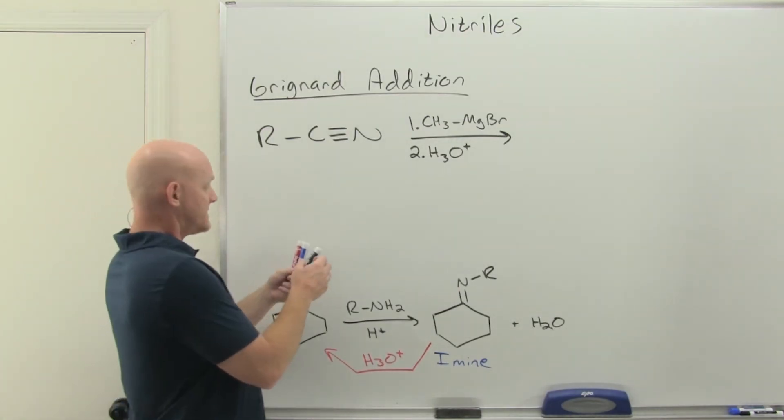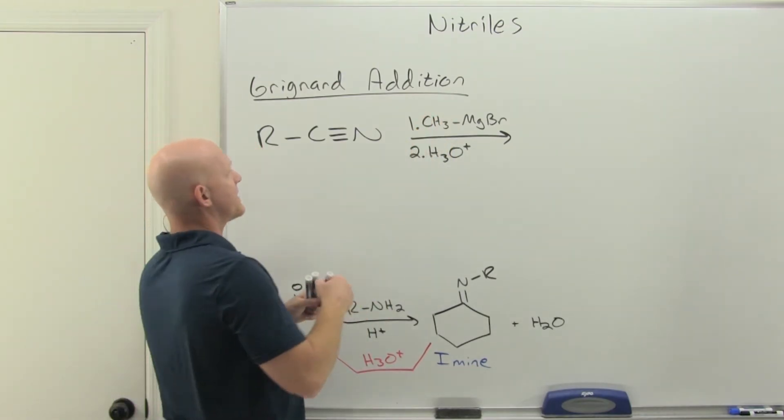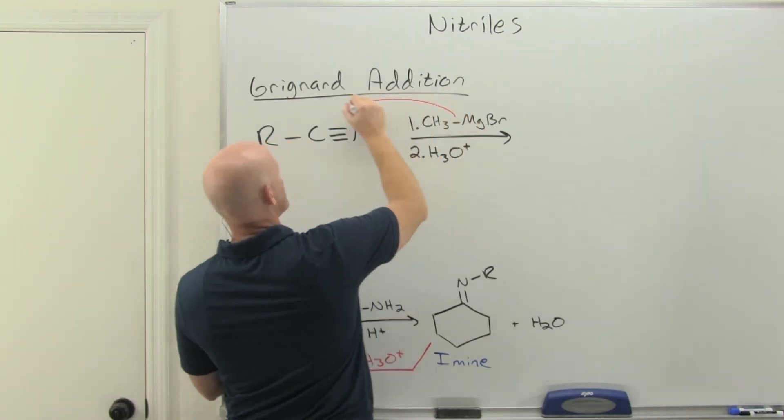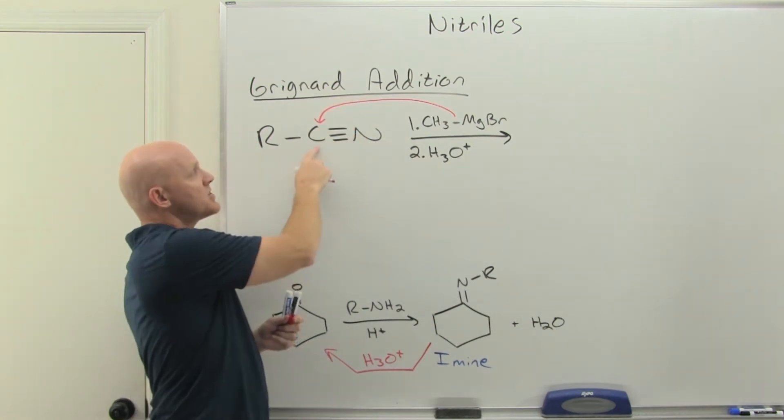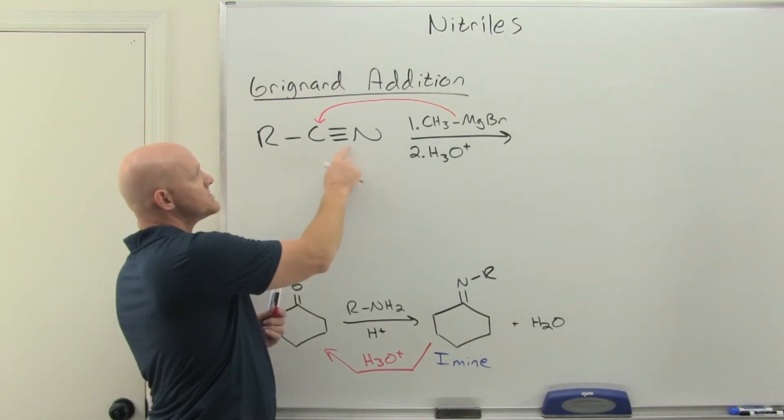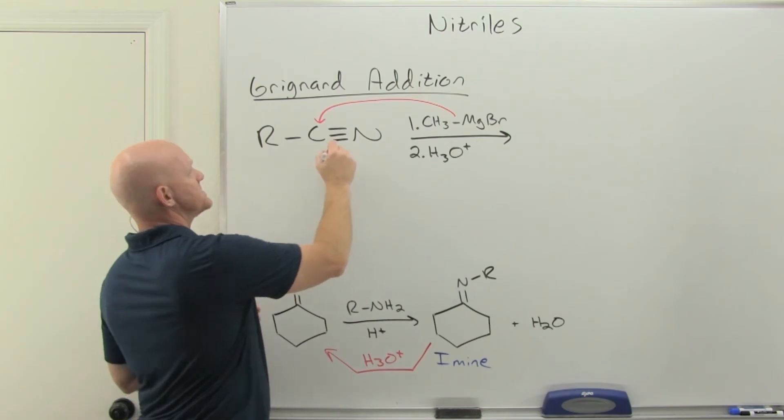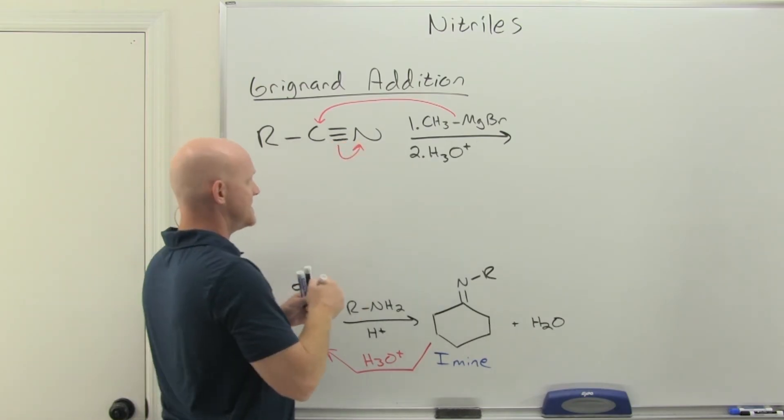Once again, think of a Grignard as a carbanion. That carbanion is going to come attack the partially positive carbon here. Instead of being double bonded to an oxygen like we normally see the attack of here, it's triple bonded to a nitrogen. Still very partially positive carbon, very good electrophile. We'll just push these pi electrons out towards the nitrogen.